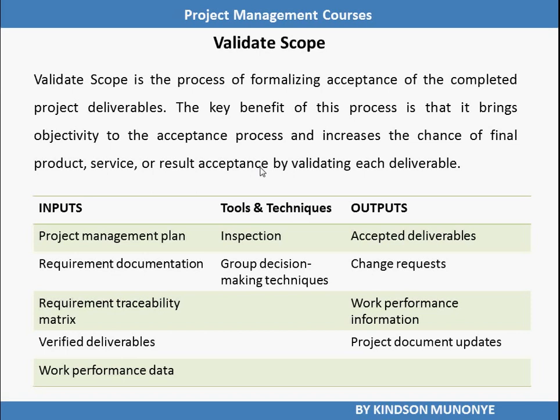Validate Scope has five inputs. First, Project Management Plan, which is a collection of all the other subsidiary plans including the baselines. Second, Requirements Documentation — the Requirements Documentation is the output of the Collect Requirements process. Third, Requirements Traceability Matrix, also an output of the Collect Requirements process.